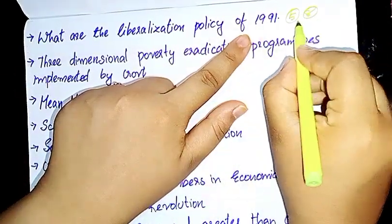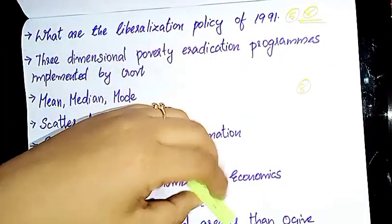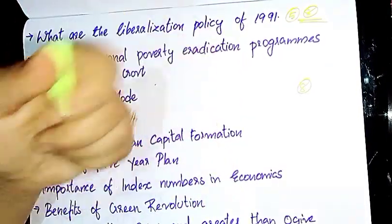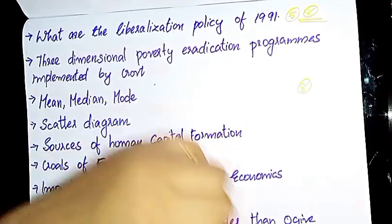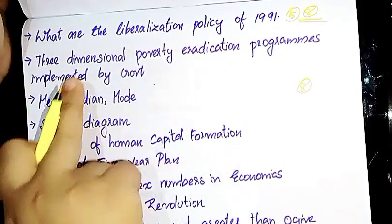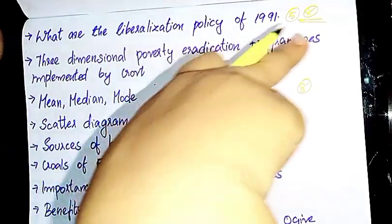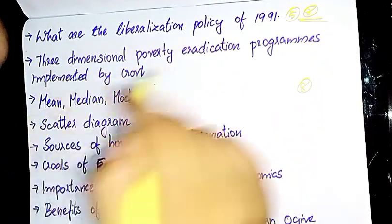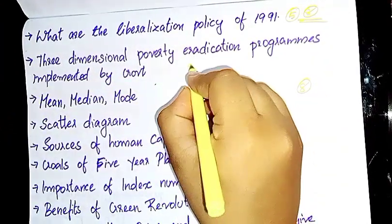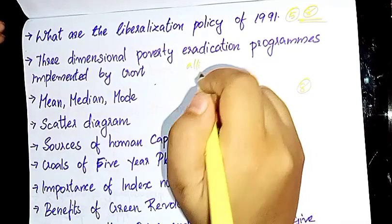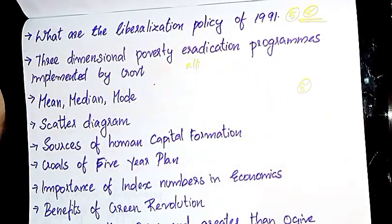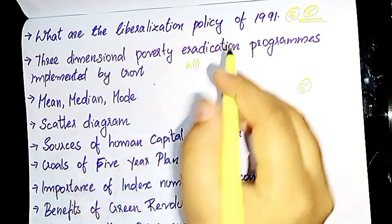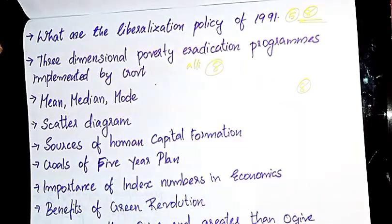The second chapter question is: What are the 3-dimensional poverty eradication programs implemented by the government? We are talking about poverty alleviation programs. The 3-dimensional poverty eradication programs include Food and Social Security. We have to talk about the 8-mark answer.